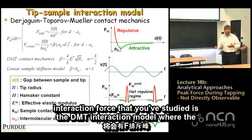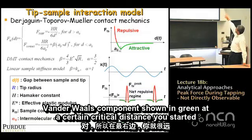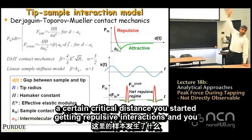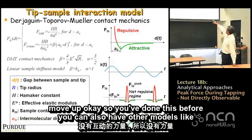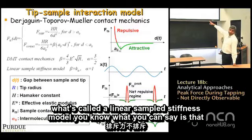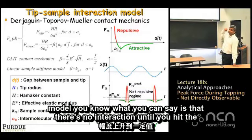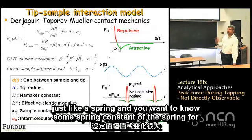A typical interaction force is the DMT interaction model, where there's a van der Waals component shown in green. At a certain critical distance, you start getting repulsive interactions and you move up. You can also have other models like a linear sample stiffness model — no interaction until you hit the sample, and the sample behaves like a spring with some spring constant.